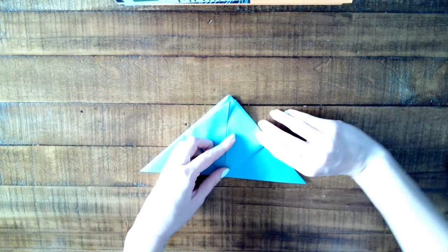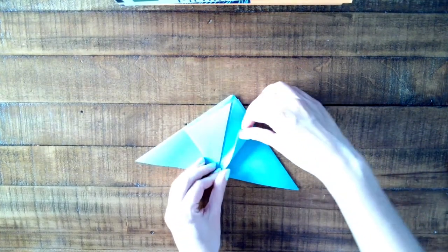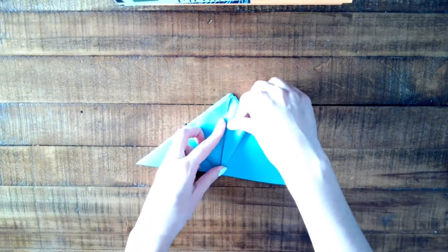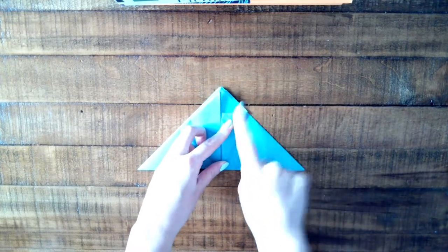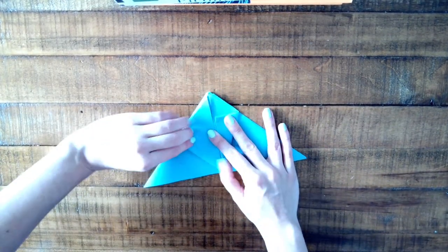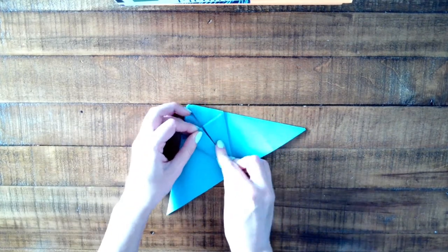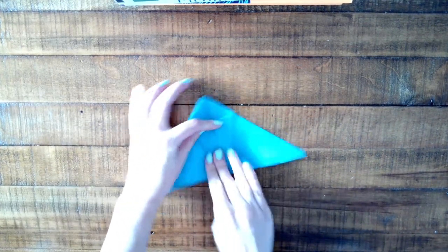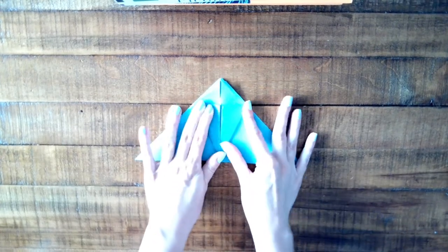Then you're going to take the outer edge of your right small triangle and fold that towards the center line. And then on the left, the outer corner and fold it towards the center line. You should now have what looks like a small kite lying on top of a large triangle.